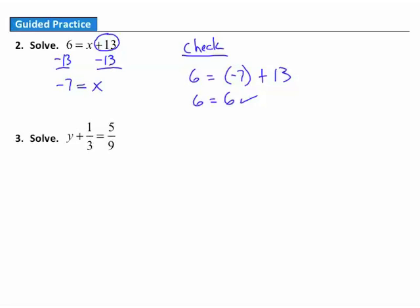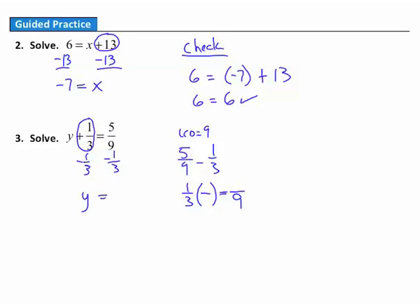Question 3. We're asked to solve this equation where the addition of 1 third keeps y from being all alone. So to get rid of the addition of 1 third, I subtract 1 third from both sides. On the left, 1 third minus 1 third is 0, leaving y. For the right side, I need to find the LCD of 9 and 3, which is 9. 5 ninths is fine; I convert 1 third to 3 ninths. So 5 ninths minus 3 ninths gives me 2 ninths.